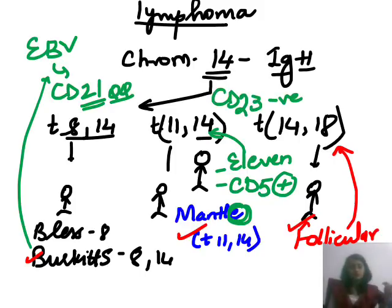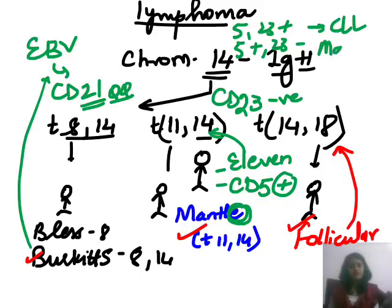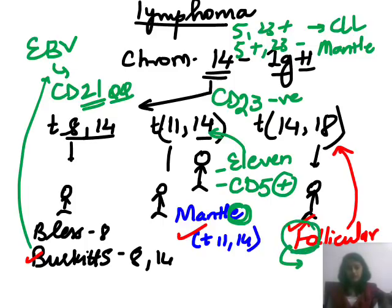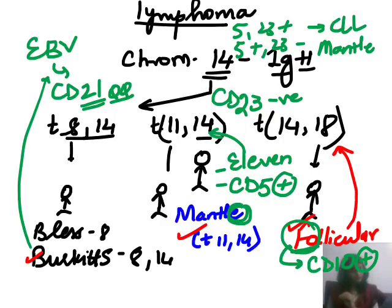Importantly, mantle cell lymphoma is CD5 positive but CD23 negative. Both CD5 positive and CD23 positive is CLL. For follicular lymphoma, 'fo' sounds like '10,' so it is CD10 positive. A lymphoma that is CD10 positive with translocation 14;18 is follicular lymphoma.